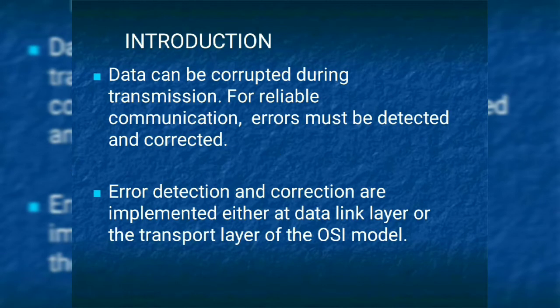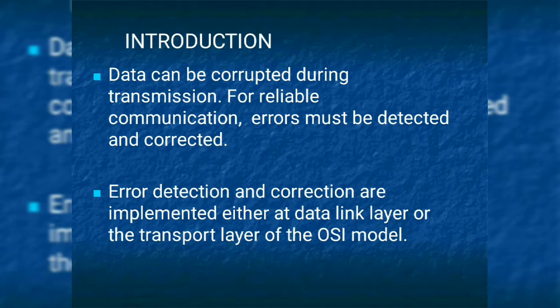First, Introduction. Data can be corrupted during transmission. In a digital communication system, you are going to send the data from transmitter to receiver. If you get the correct information, then only the system is reliable. If you are getting an error, the system will not be reliable. In order to have reliable communication, we need to detect and correct the errors. Error correction and detection is implemented for the data link layer and the transport layer of the OSI model.